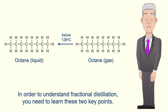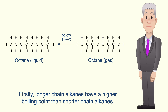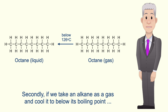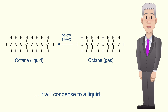To understand fractional distillation you need to learn these two key points. Firstly, longer chain alkanes have a higher boiling point than shorter chain alkanes. Secondly, if we take an alkane as a gas and cool it to below its boiling point, it will condense to a liquid.